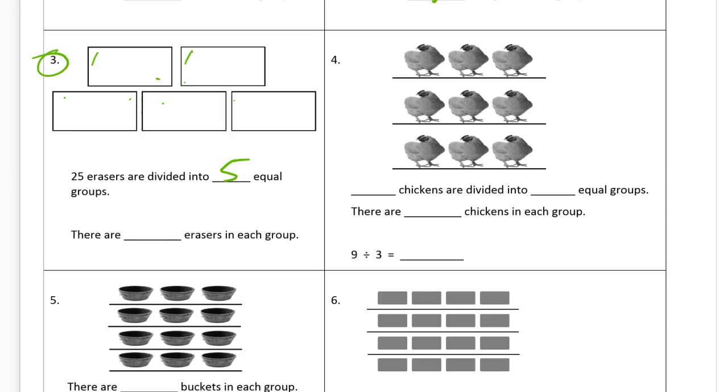It's going to be 1, 2, 3, 4, 5, 6, 7, 8, 9, 10, 11, 12, 13, 14, 15, 16, 17, 18, 19, 20, 21, 22, 23, 24, 25. So that's all 25 of them and you can see that from the tally marks, there are five erasers in each group.